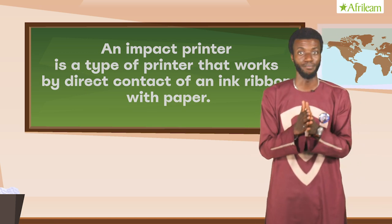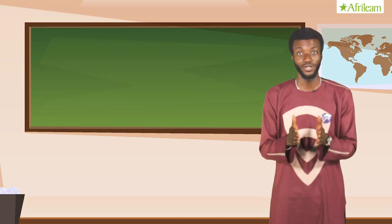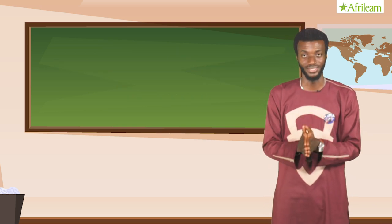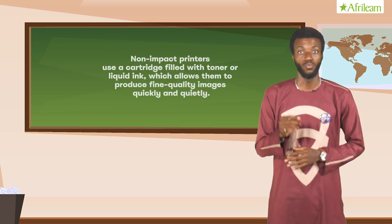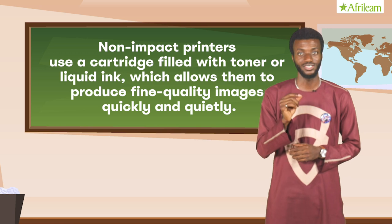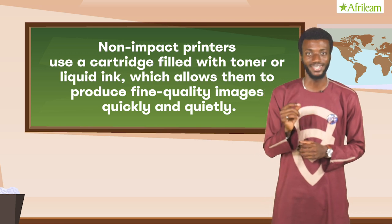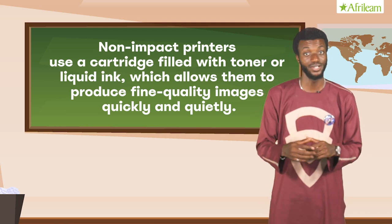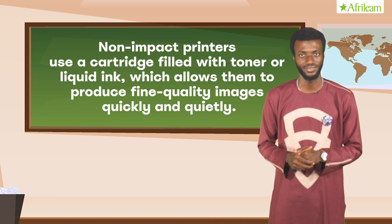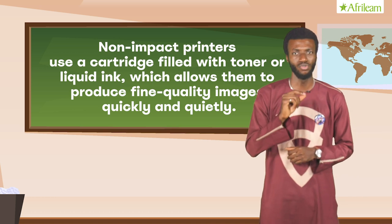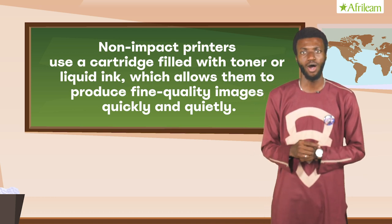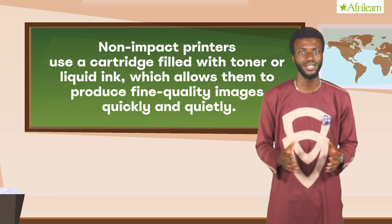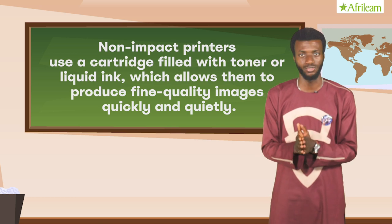The second type is the non-impact printer. This type of printer does not have to strike against the ribbon before text or images can be printed on paper. It is noiseless while producing good quality prints. Above all, it is very fast too.